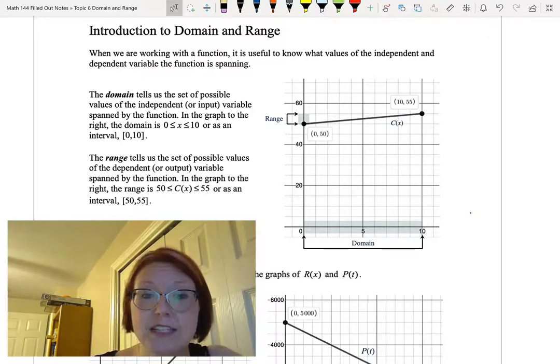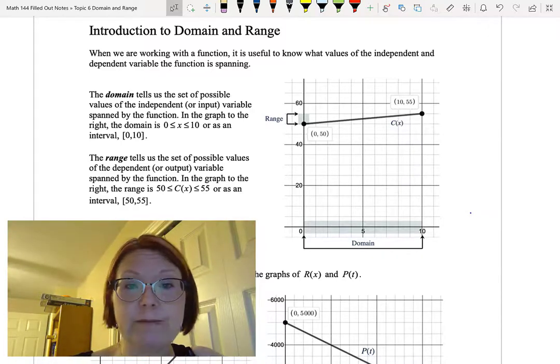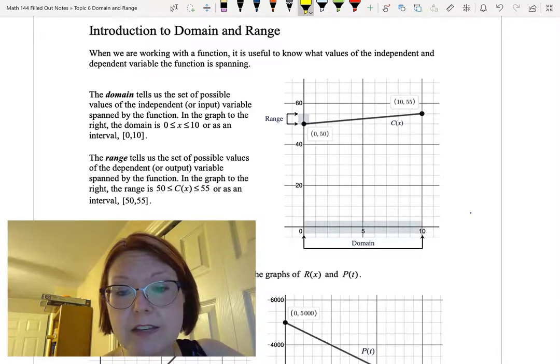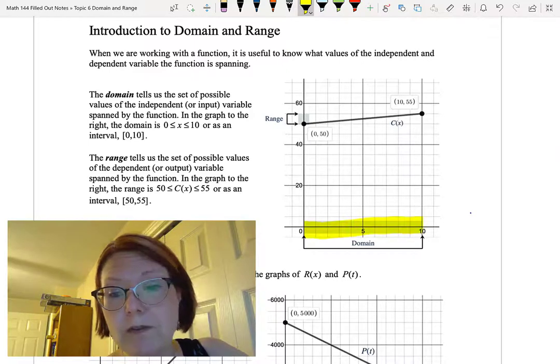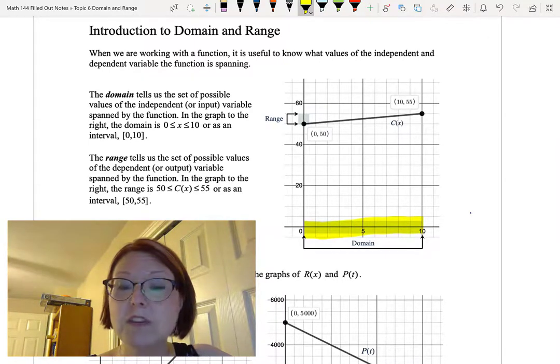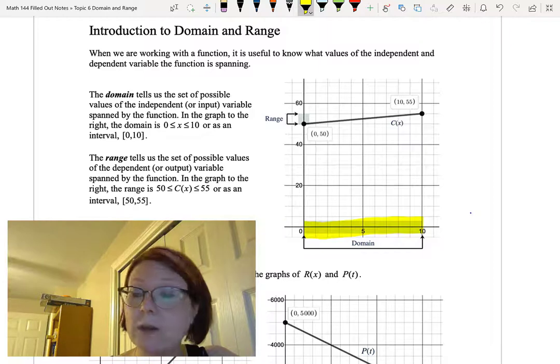The domain tells us the set of possible values of the independent variable spanned by the function. The domain spans from x equals 0 all the way up to x equals 10. Those are the allowed x values that we have. We could also write this as an interval left bracket 0 comma 10 right bracket.